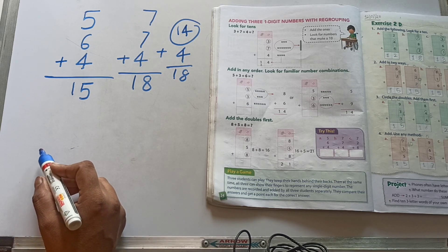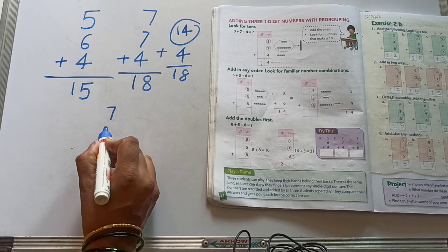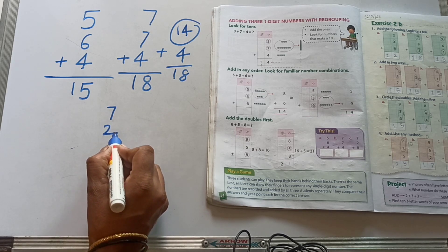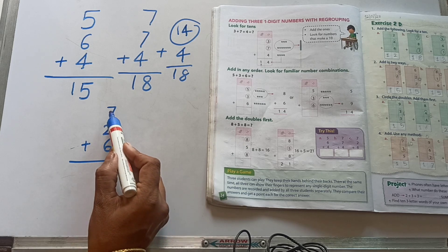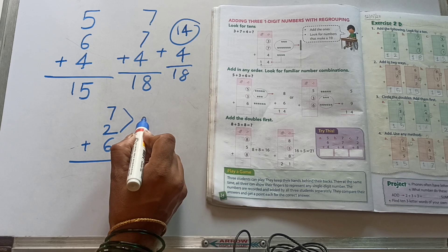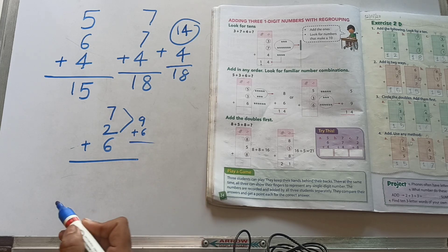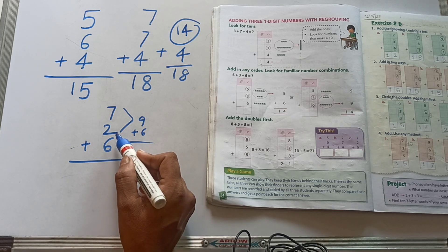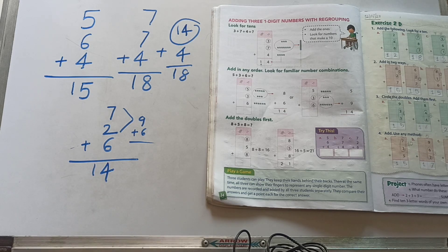Third one, try this section. 7, 2, plus 6. 7 plus 2, 9. Plus 6, 14. I love you understood? Very good.